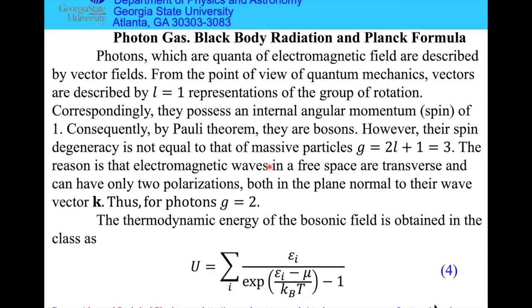However, their spin degeneracy is not equal to 2s+1 equals 3, as one may expect for massive particles. Because the mass equals zero, they are transverse fields. Both electric and magnetic field are situated in the plane normal to direction of propagation. Correspondingly, there are only two polarizations present. Therefore G equals 2 for photons.